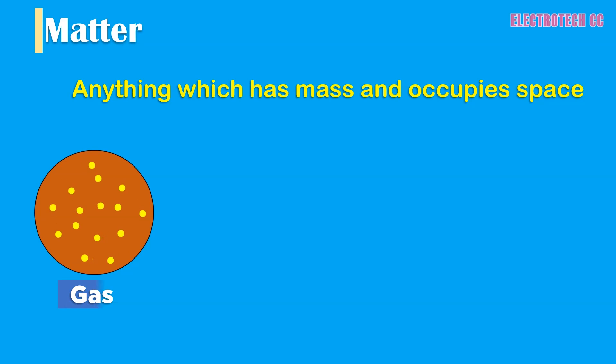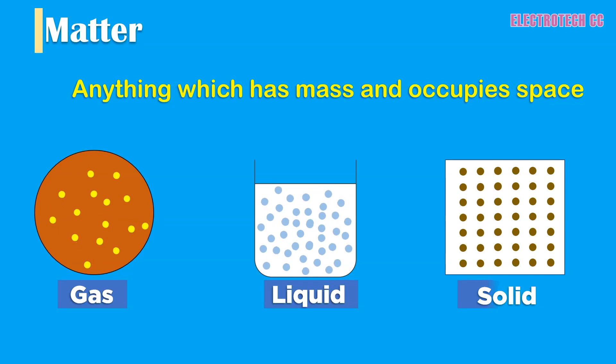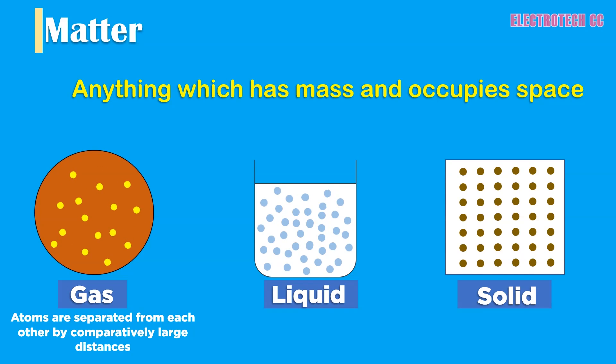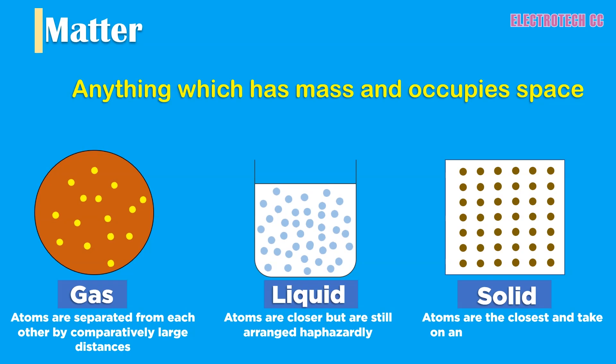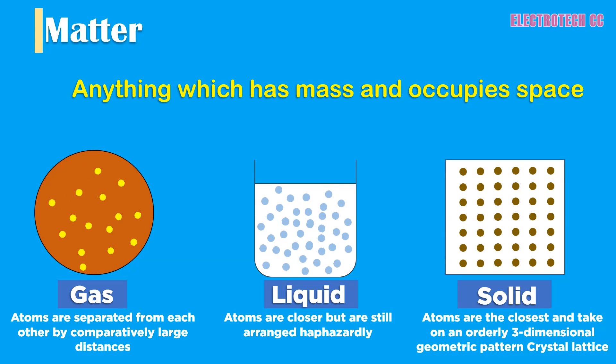Let's start with matter. Matter is anything which has mass and occupies space. It can exist in any of the following three states: gas, liquid, and solid. In gaseous state, the atoms are separated from each other by large distances and are haphazardly arranged. In liquid state, they are somewhat closer but are still arranged haphazardly. In the solid state, atoms are the closest and take an orderly three-dimensional geometric pattern called crystal lattice, as shown in the figure.